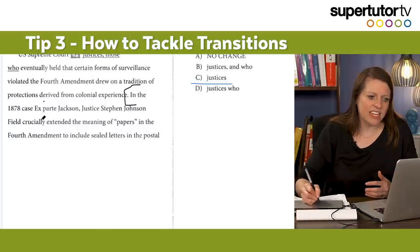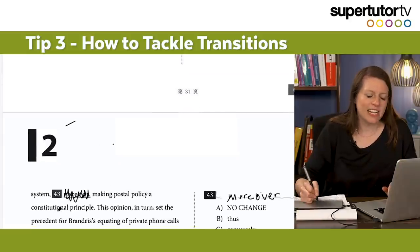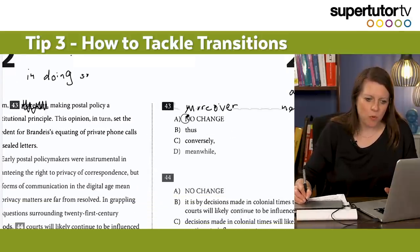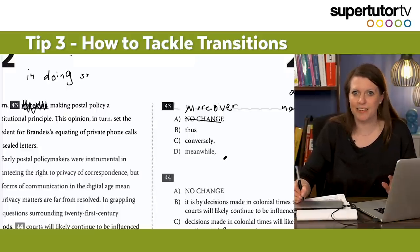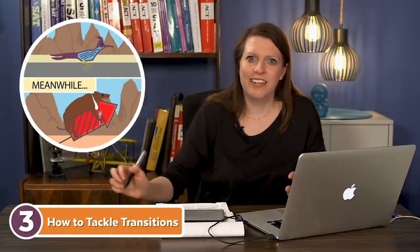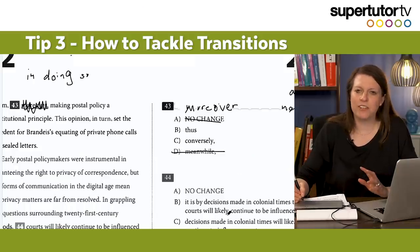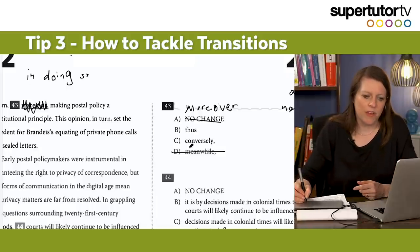In the 1878 case, ex parte Jackson, Justice [this person] crucially extended the meaning of 'papers' in the Fourth Amendment to include sealed letters in the postal system, making postal policy a constitutional principle. So here I want something like 'in doing so' or maybe 'thereby.' We have 'moreover,' 'thus,' 'conversely,' and 'meanwhile.' Meanwhile I use when two things are happening at the same time — like Wile E. Coyote's over here and meanwhile the roadrunner's over there, different storylines happening simultaneously. So meanwhile is just not right here. Conversely is contrast — it's definitely wrong because these clauses are in a 'doing so' relationship, not a contrast.